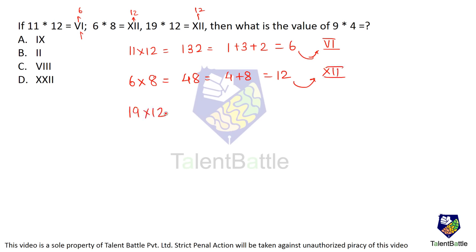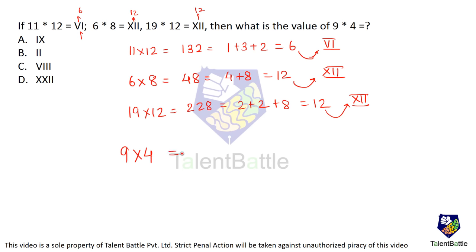Next: 19 into 12. 19 tens are 190, 19 twos are 38, so 190 plus 38 comes out to be 228. So 2 plus 2 plus 8 again comes out to be 12, written in Roman numeral format. Now for 9 into 4: that comes out to be 36, so 3 plus 6 equals 9. This 9 is written in Roman numeral form, so the answer is option A.